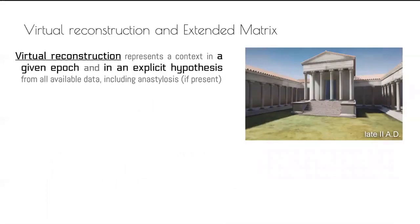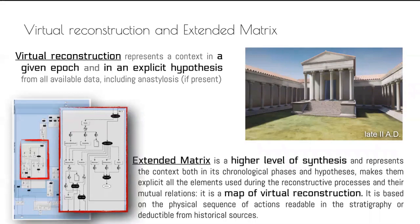Finally, the virtual reconstruction — be careful — is the reconstruction of a given epoch in an explicit hypothesis. The extended matrix, as a level of synthesis, represents the context on all chronological phases. You can store different virtual reconstructions inside it — one for each epoch, since in a matrix you have different epochs and you can have a reconstruction for each epoch you want to study.